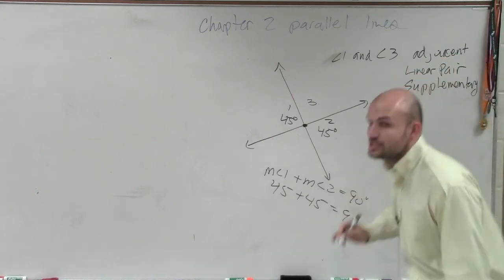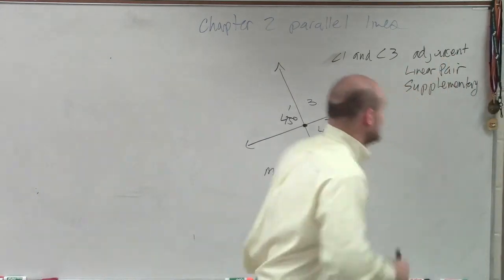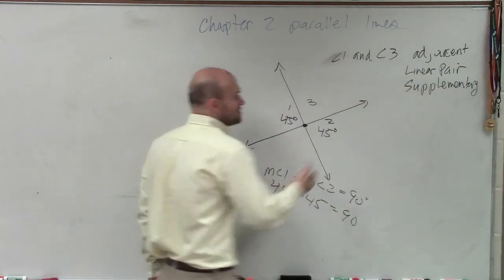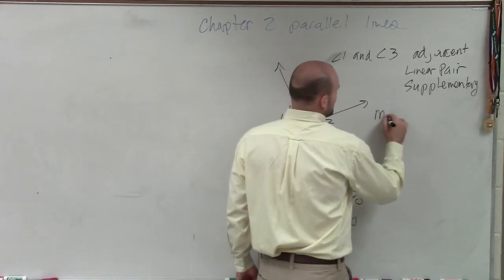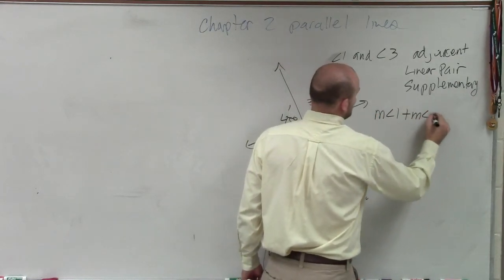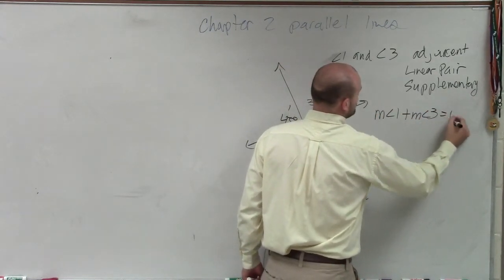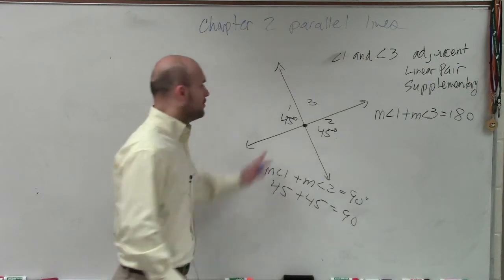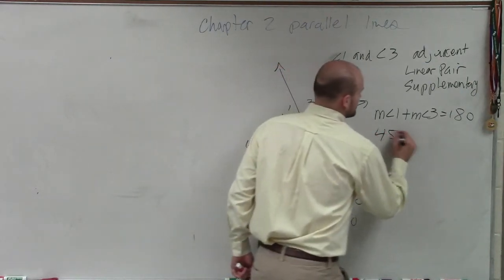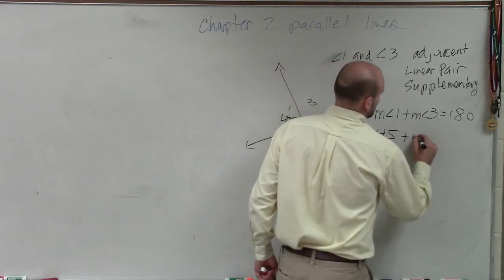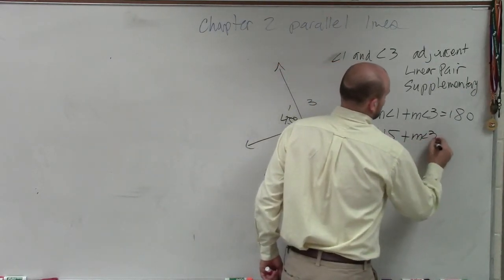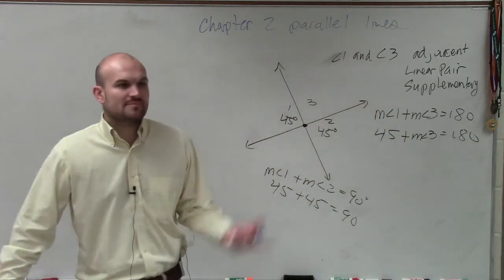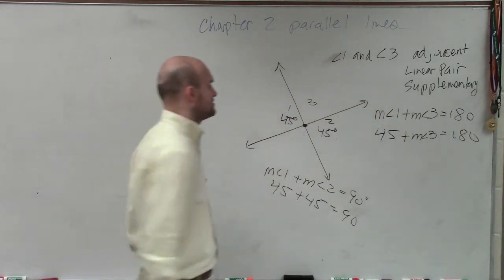And since they're supplementary, we know they add up to 180. So measure of angle 1 plus measure of angle 3 equals 180. So if we know this is 45 degrees, what would you say the measure of angle 3 is?